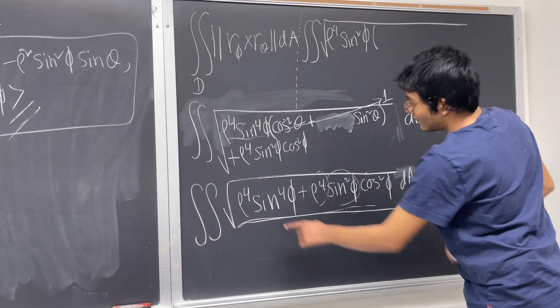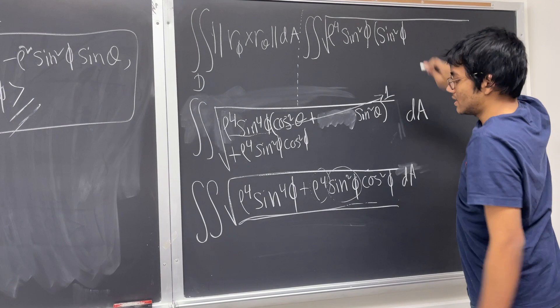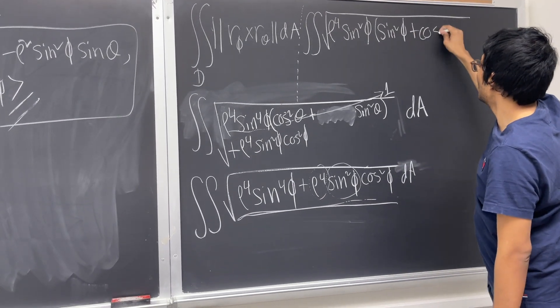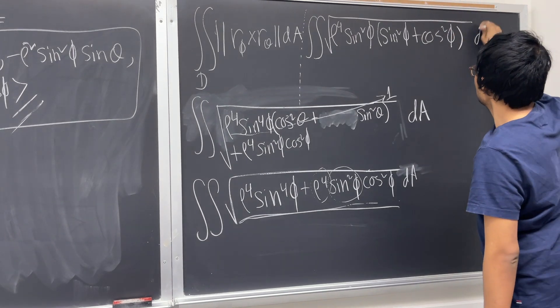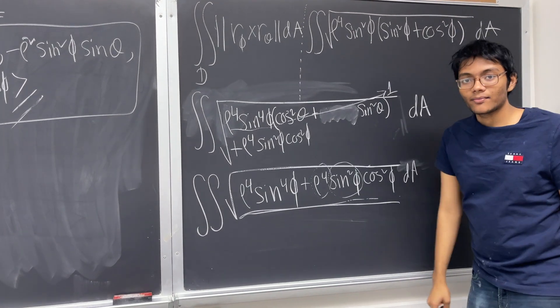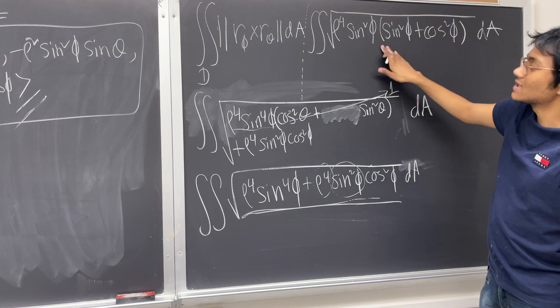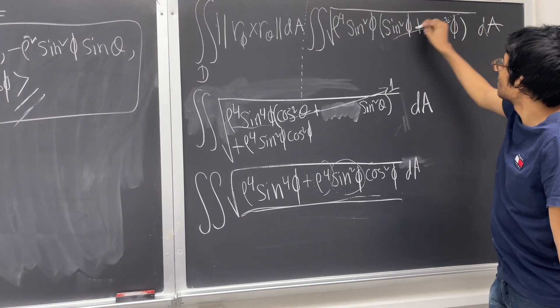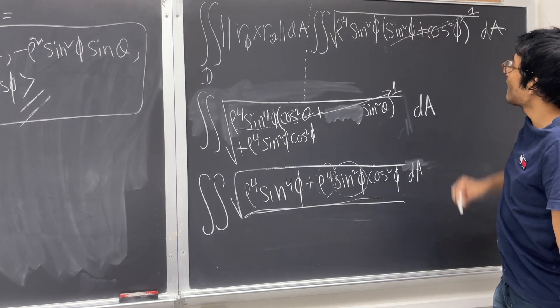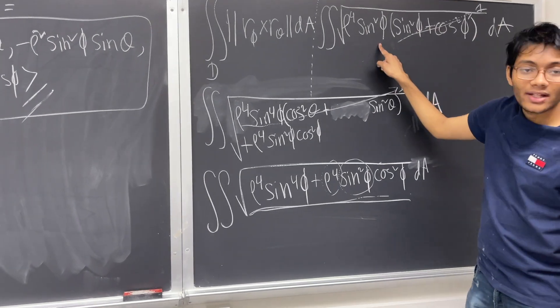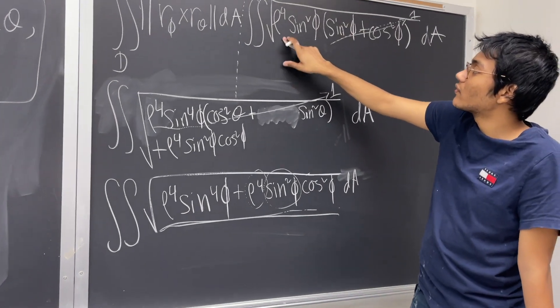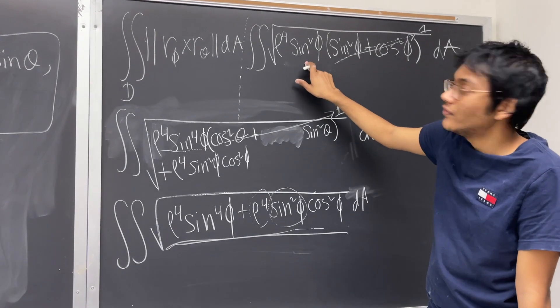Well, on the inside, I have sine squared phi over here, as per this one, and I have cosine squared phi. Wow, look at that. It's like the math has conspired in just the right way so that this becomes a one. So what am I left with inside the square root? A joke, the square root of rho to the fourth power times sine squared phi.